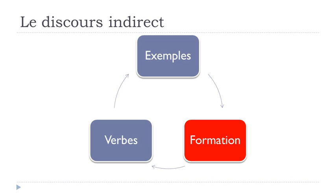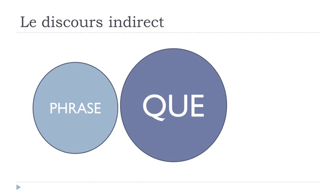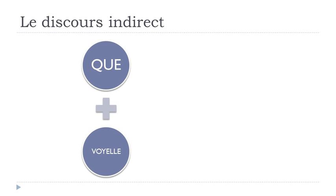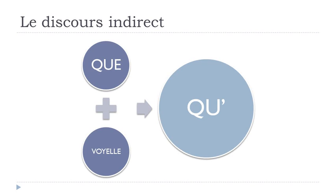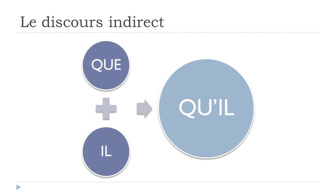To summarize la formation: you put the first part of the sentence, then que — which translates as 'that' in English — and then the rest of the sentence, modifying the subject and verb if necessary. Keep in mind that que combined with a vowel becomes qu'. The classical example: que + il becomes qu'il; que + elle becomes qu'elle. The same applies to first names starting with a vowel.